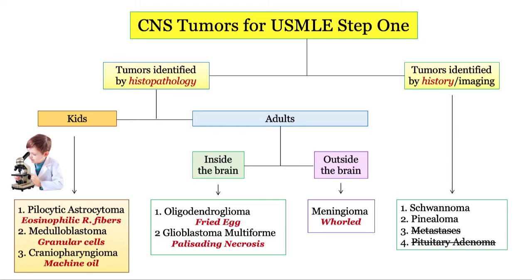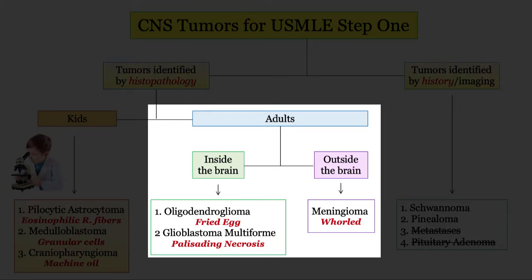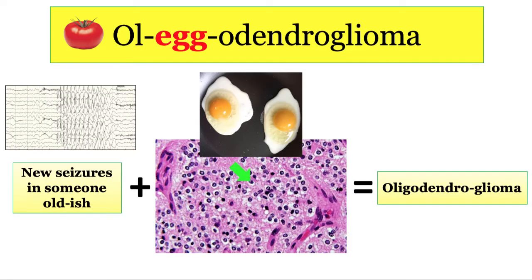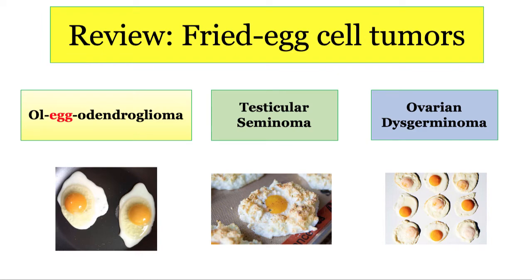That's it for pediatric tumors — three distinct tumors with unique presentations, clinical behavior, and pathologic findings. Moving into adult brain tumors: oligodendrogliomas and glioblastoma multiforme. Remember our oligodendrocytes with their tomato-shaped nuclei? These myelinating cells can proliferate into oligodendrogliomas. There will be two main giveaways: fried egg cells on pathology and new onset seizures in an adult. The USMLE will also want you to know that testicular seminomas and ovarian dysgerminomas will also have fried egg cells on biopsy.